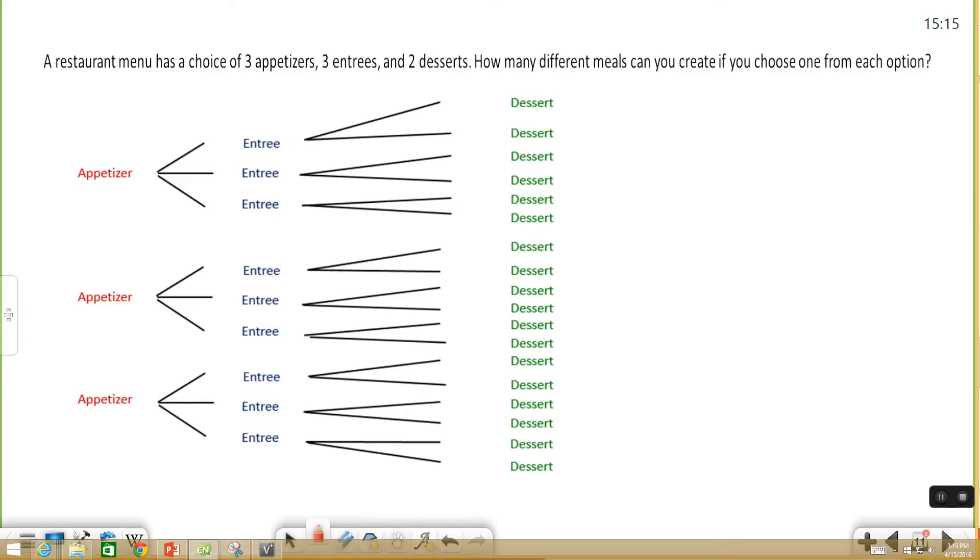So for this example, the fundamental counting principle would say we can take our three appetizers times our three entrees times our two desserts, multiply them together, and we'll get our total possible meals.